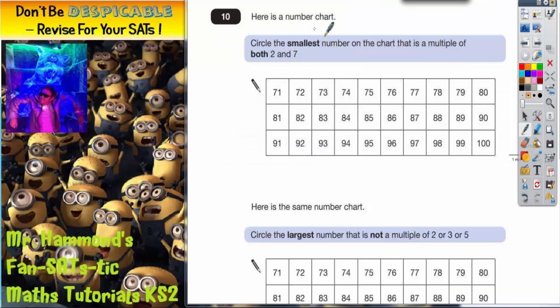Question 10: here is a number chart. It says circle the smallest number on the chart that is a multiple of both 2 and 7. Well, we're only interested in multiples of 2 and 7. Now multiples of 2 are even numbers, so anything that's odd we can cross out straight away. So that's odd, odd, odd, odd, odd.